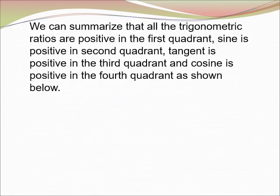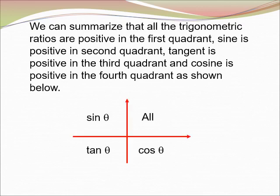We can summarize that all trigonometry ratios are positive in the first quadrant, sin is positive in the second quadrant, tangent is positive in the third quadrant, and cos is positive in the fourth quadrant.